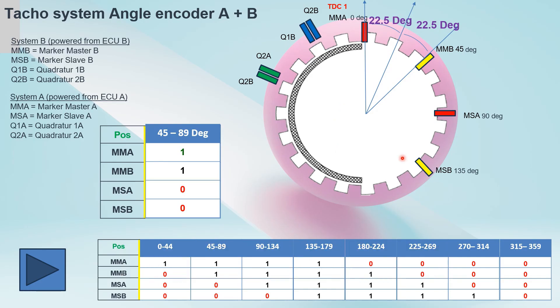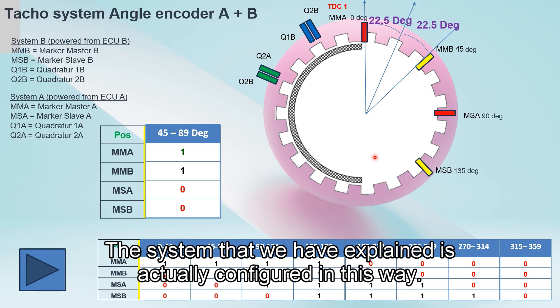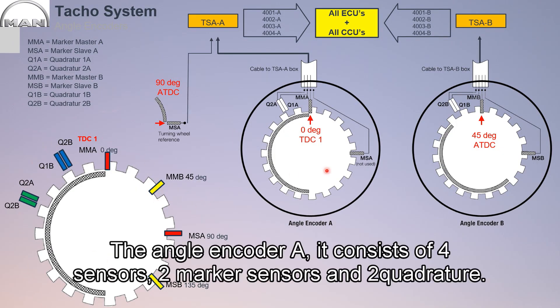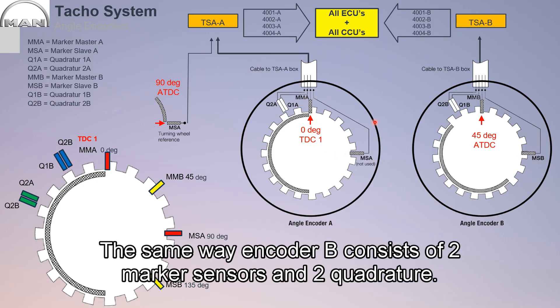The system that we have explained is actually configured in this way. Angle encoder A consists of four sensors: two marker sensors and two quadratures. The same way, encoder B consists of two marker sensors and two quadratures.